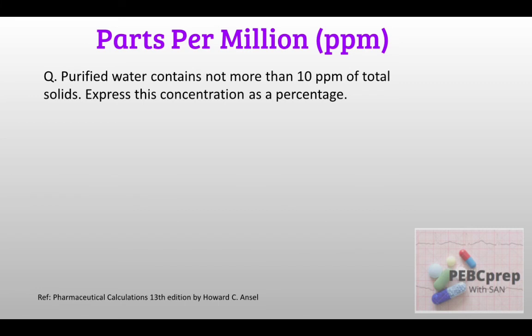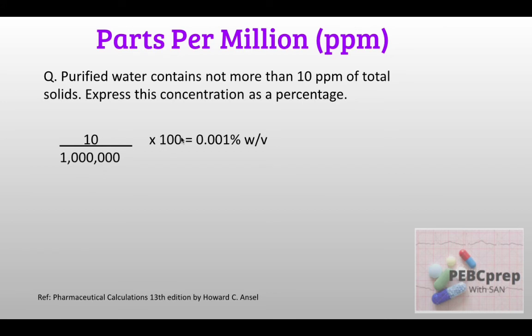Next question: purified water contains not more than 10 ppm of total solids. Express this concentration as a percentage. We calculate: 10 divided by 1,000,000, multiplied by 100 for percentage, giving 0.001 percent weight by volume.